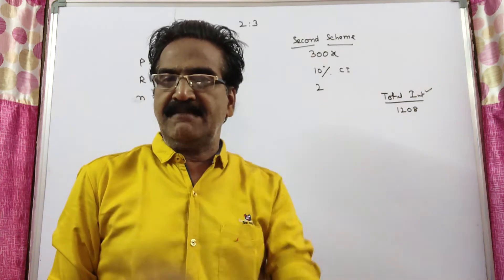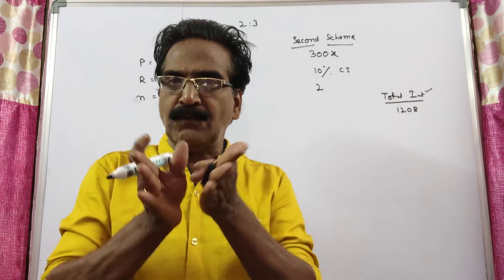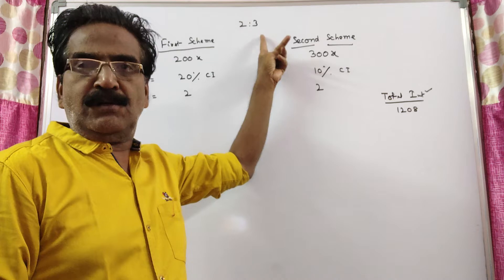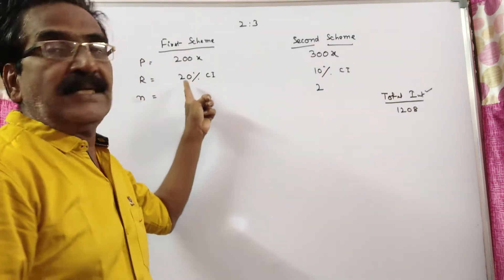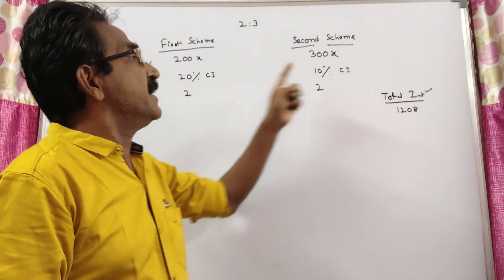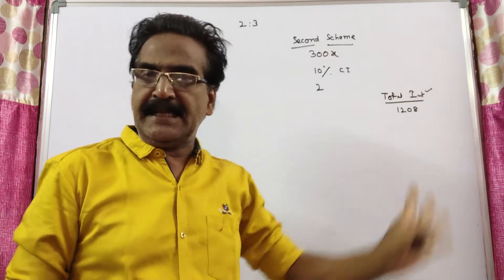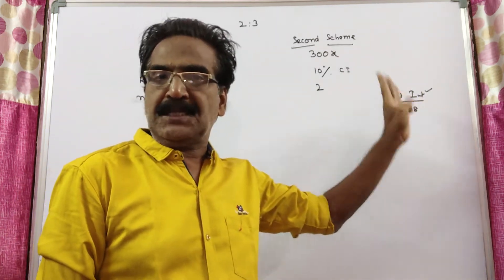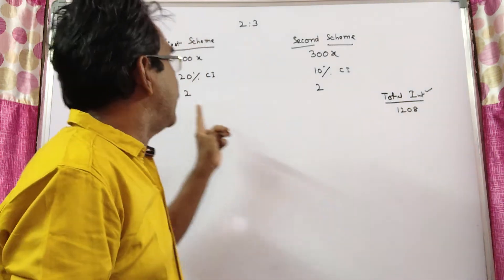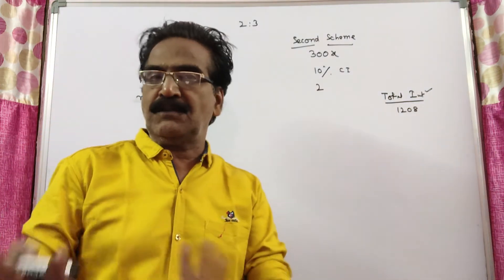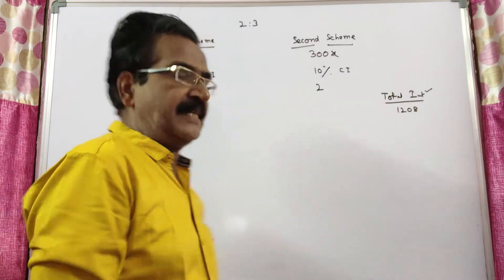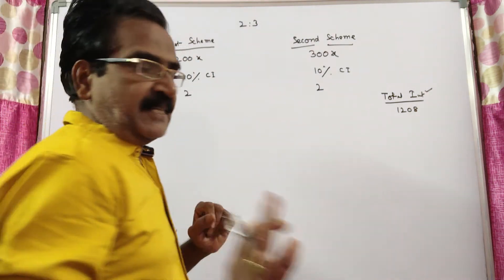See friends, a man invested a certain sum in two different schemes in the ratio 2 is to 3 at 20% per annum CI and 10% per annum CI respectively and he received 1208 rupees total compound interest at the end of 2 years. Now the question is what is the total sum invested?